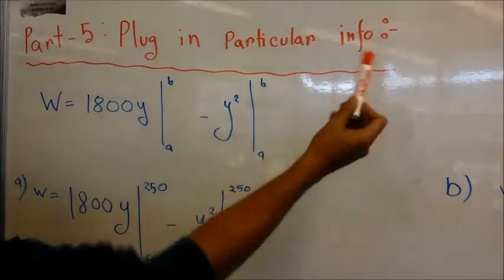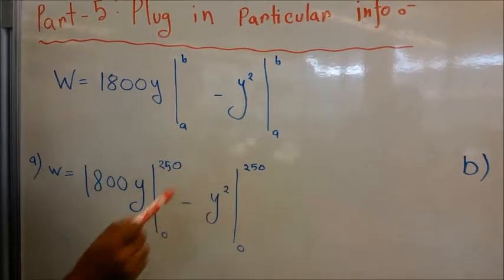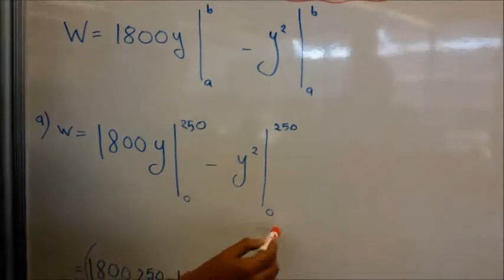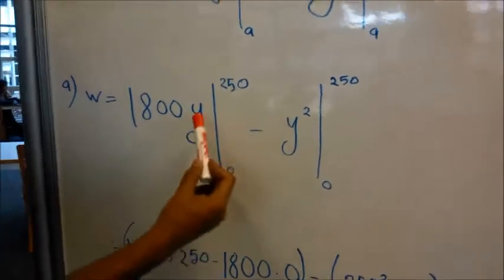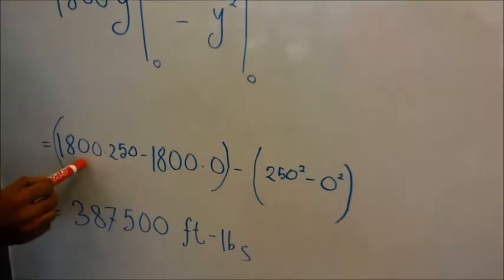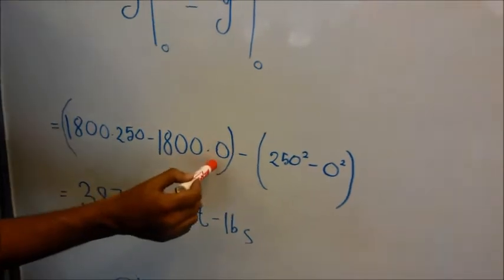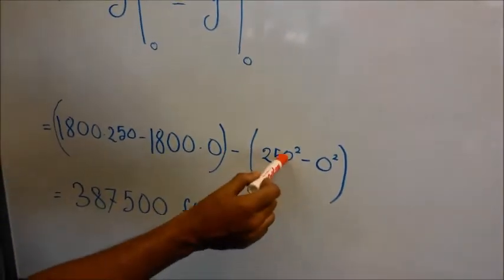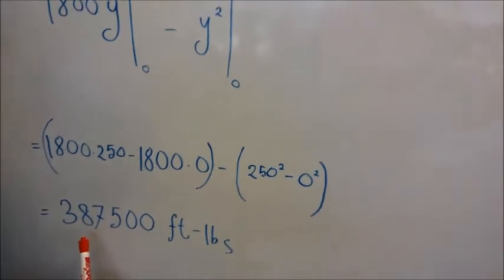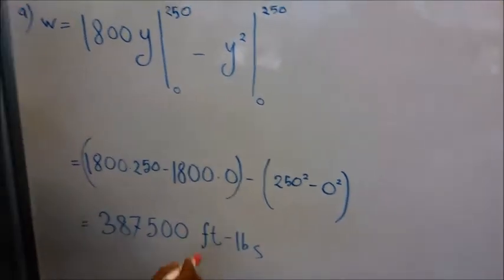In part five, plug in particular information. For part A, our limit is 0 to 250. Applying fundamental theorem of calculus, we get 1800 times 250 minus 1800 times 0, minus 250 squared minus 0 squared. We get 387,500 foot-pounds.